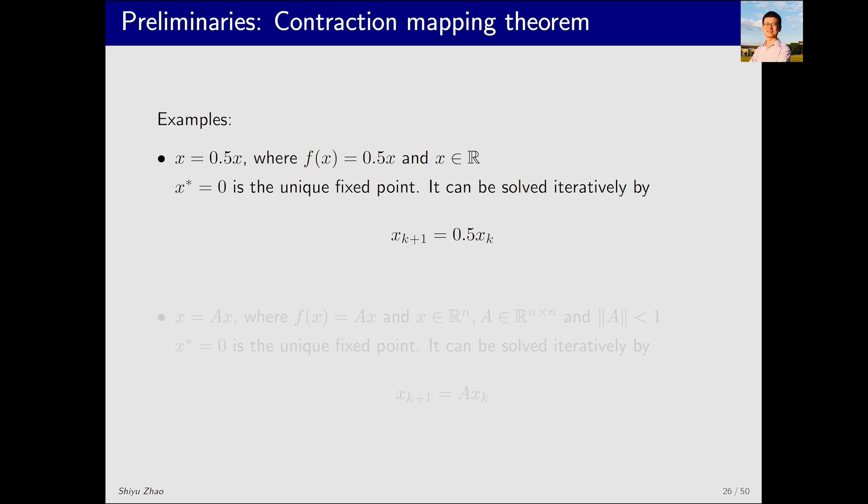Next, I briefly demonstrate this theorem through two examples. First, consider the equation x equals 0.5x, which we previously analyzed. We know x equals 0 is a fixed point, and now we understand that it is a unique fixed point. Moreover, we now know that such a fixed point can be found through this algorithm. This example is simple, so we can directly see that the fixed point is 0. The algorithm also demonstrates convergence to 0. For instance, if we start with x0 being 10, then x1 would be 5 and x2 would be 2.5, clearly showing a trend towards 0.